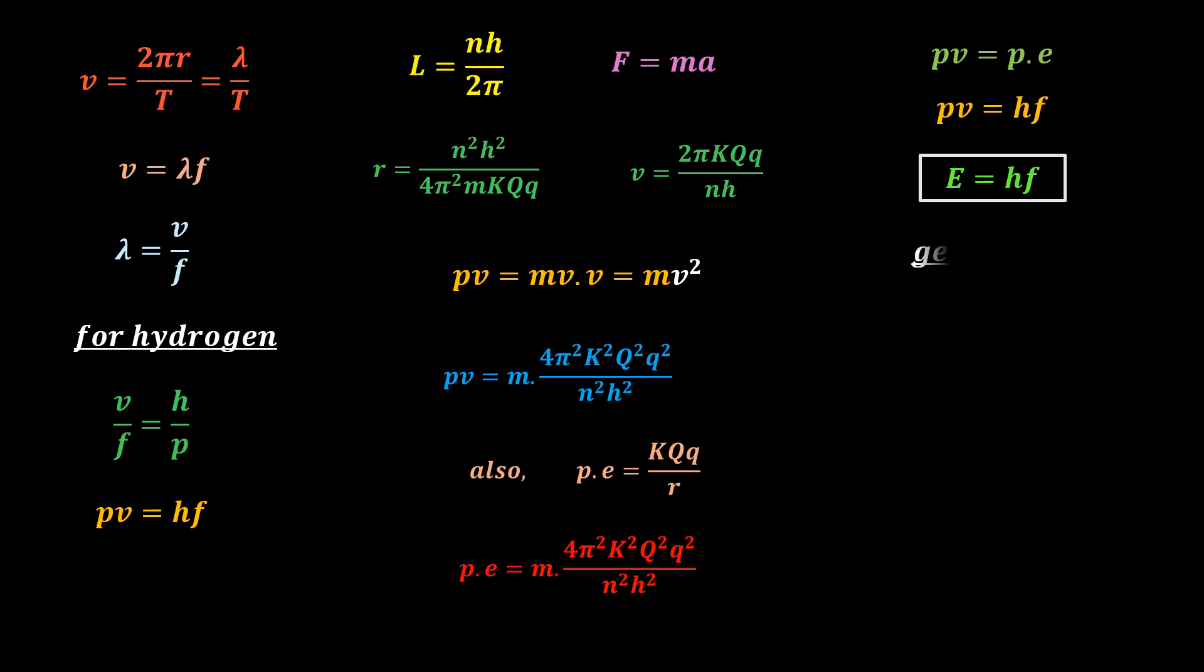To get a general equation, we have to use the general de Broglie equation, nh over p, in which case, we get E equal to nhf, the correct form of Planck's quantization equation. The presence of n here is again a very important detail. This is another important quantum mechanical formula gotten directly from classical analysis.